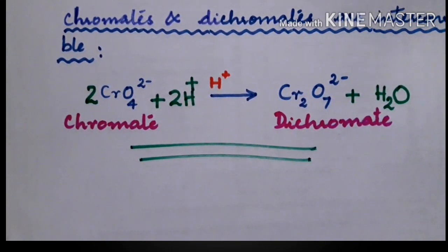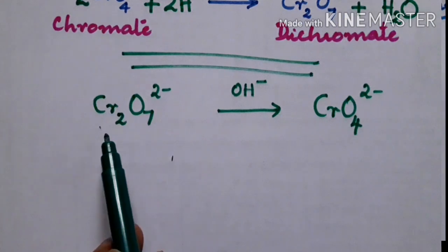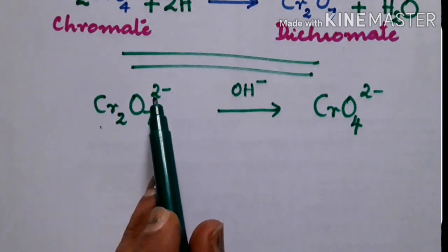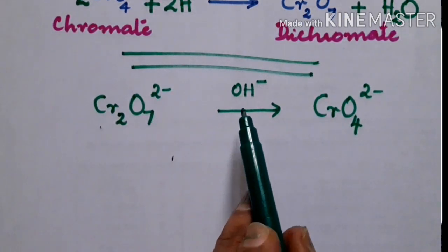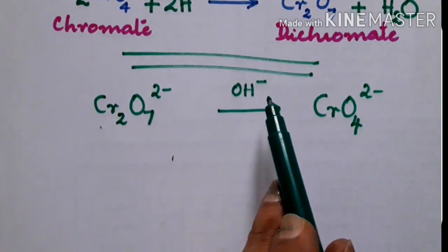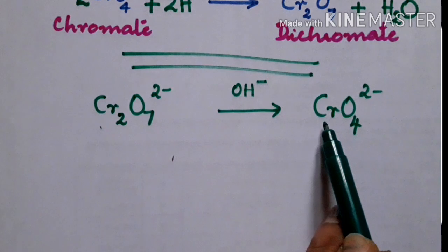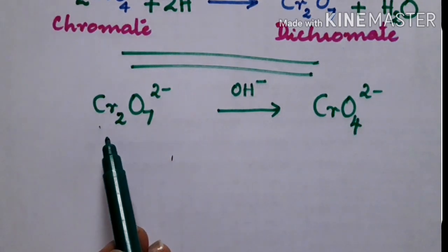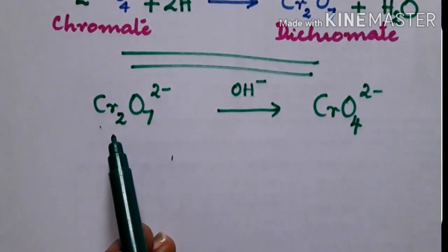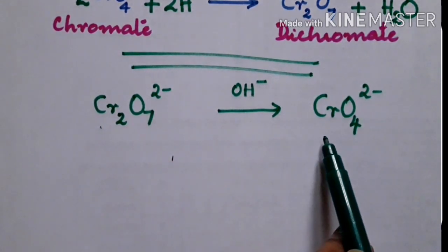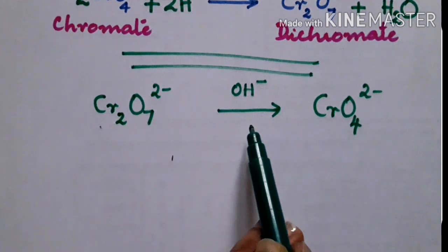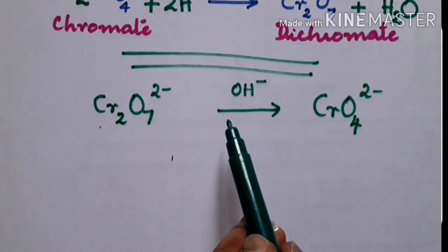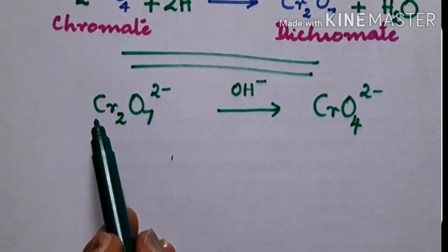Now coming to the next one. Cr2O7 2- in the presence of a base will be converted to CrO4 2-. That is, dichromates will be converted to chromates in basic medium.